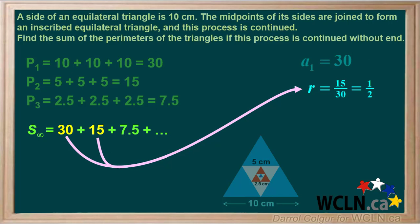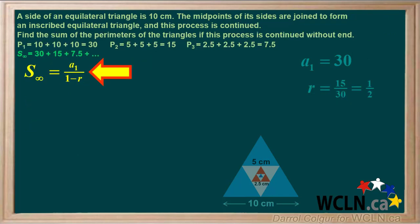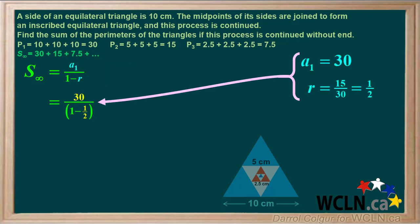Because R is between 0 and positive 1, this is a convergent series. So we'll start with the equation for the sum of a convergent infinite series and substitute 30 for A1, and 1 half for R.